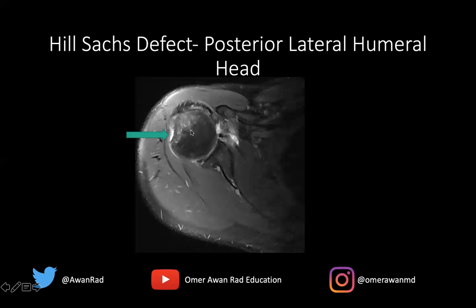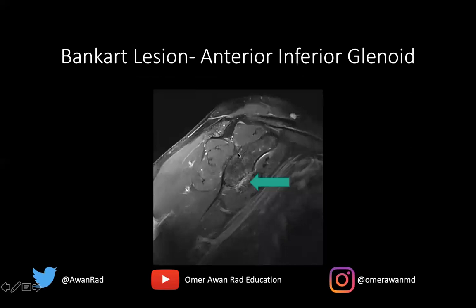This must mean there has been a prior anterior glenohumeral joint dislocation. It's not currently dislocated because the humeral head is articulating well with the glenoid — it's currently located, but we see evidence of prior dislocation. The Bankart lesion on MRI is best seen on the sagittal view — this is the Y of the scapula, with the acromion, coracoid process, and glenoid visible. The subscapularis and lung are anterior, so anterior is this side and posterior is the other.